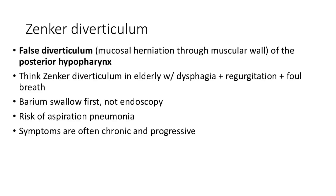Zenker diverticulum is a false diverticulum occurring in the posterior hypopharynx, mostly affecting the elderly. Symptoms include dysphagia, regurgitation, and foul breath. Diagnosis is through a barium swallow, and there's a risk of aspiration pneumonia due to chronic and progressive symptoms.